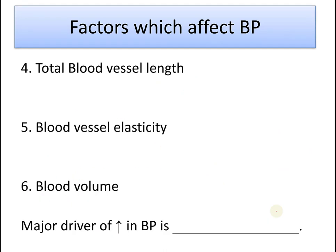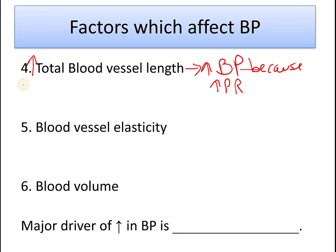Total blood vessel length also affects blood pressure. If the total length increases, peripheral resistance increases because blood encounters more friction over a longer distance, raising blood pressure. This happens in people who are obese — they have more fat tissue, which also needs oxygen and nutrients, so more blood vessels form to serve that fat, increasing total blood vessel length and therefore blood pressure.